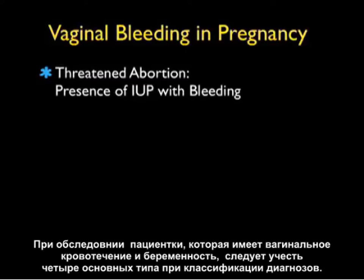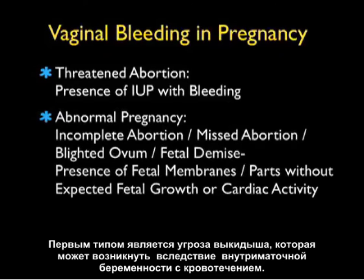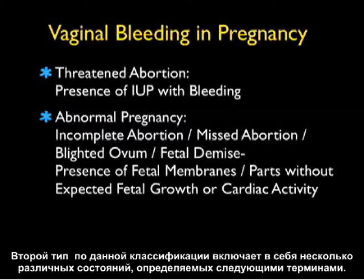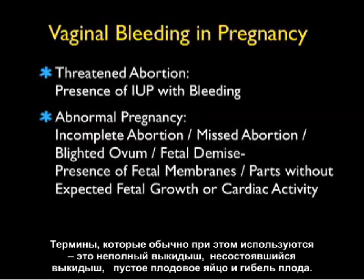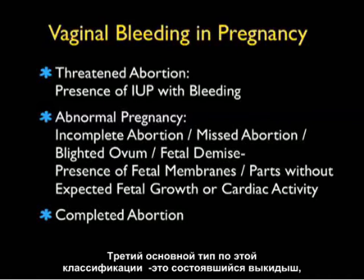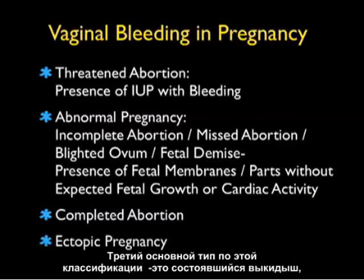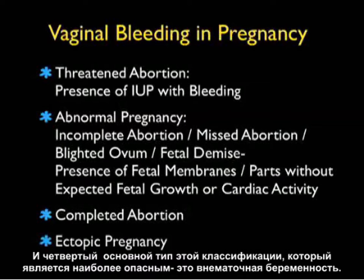When taking care of a patient who has vaginal bleeding in pregnancy, there are four main classifications of diagnoses. The first is a threatened abortion, defined as the presence of an intrauterine pregnancy with bleeding. The second encompasses several terms: incomplete abortion, missed abortion, blighted ovum, and fetal demise — all meaning the presence of fetal membranes or parts without expected fetal growth or cardiac activity. The third is a completed abortion, where there's no further presence of fetal membranes or parts and the cervical os is usually closed. The fourth and most dangerous is ectopic pregnancy.